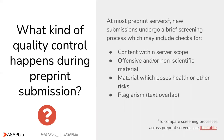So what kind of quality control happens during preprint submission? During the submission of a preprint to a preprint server, new submissions undergo a brief quality control screening process that usually takes less than 24 hours. Usually, before being posted, each submission is screened to determine whether it looks like a scientific paper.